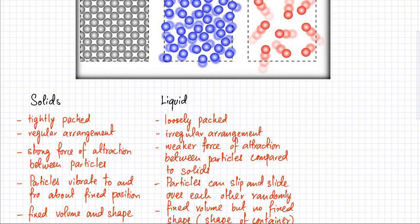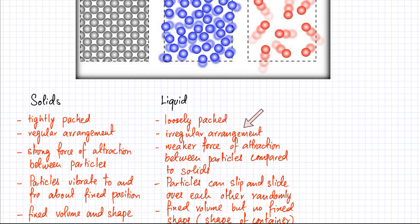In liquid state, particles lose the tight packing — there are some gaps between particles because they are energetic and push each other around. There is an irregular arrangement because now particles are moving around, slipping and sliding over each other. The force of attraction between particles is weaker compared to solids, since the particles are energetic enough to overcome the force of attraction that was holding them together. The particles can slip and slide over each other randomly, but not freely — they cannot move in all directions.